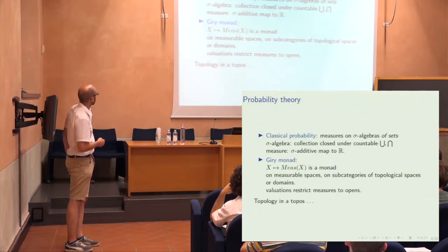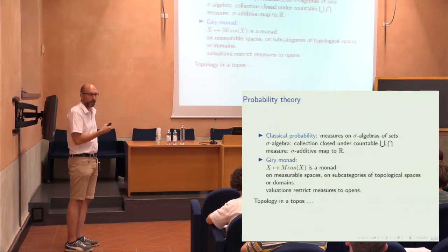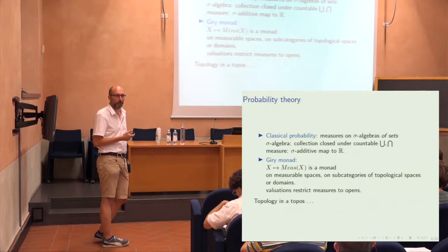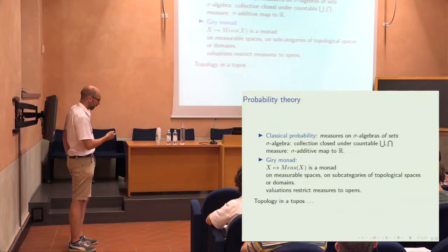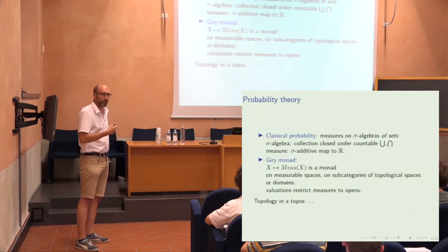There's a beautiful paper by Giry where she shows that the collection of measures on a set is actually a monadic construction, which allows you to capture many constructions in probability theory. This is a monad on — you can play with what kind of category — measurable spaces, Polish spaces, or some other subcategory of topological spaces. There's work by Jones and Plotkin on extending this to domains, because that gives you a much nicer setting to develop the semantics for programming languages.